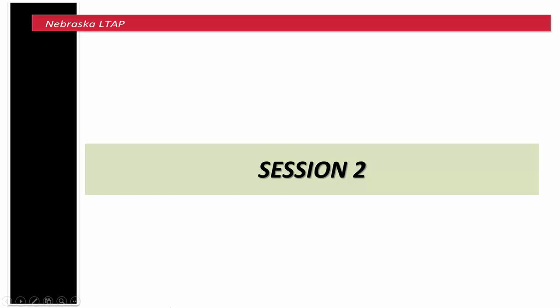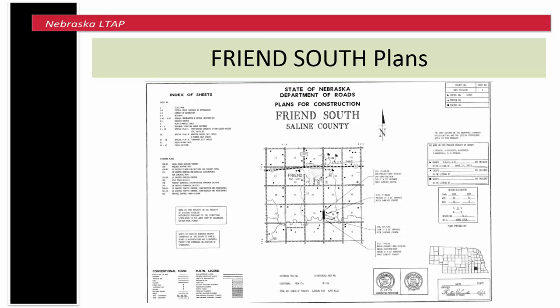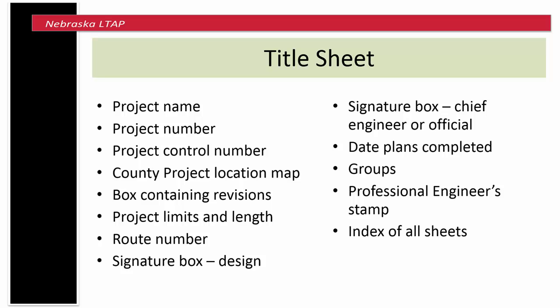Session two. Here are the answers to exercise number four. We will now look at the Friends South plans. The very first sheet is called the title sheet. This slide shows the items found on the title sheet. We will look at many of these individually.